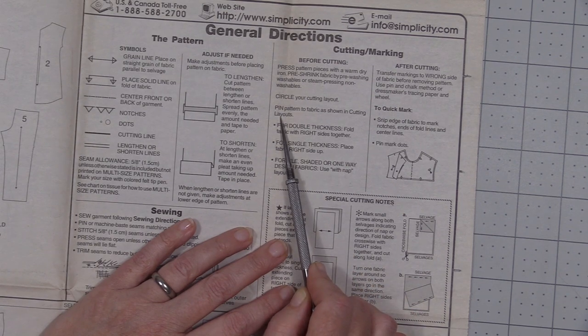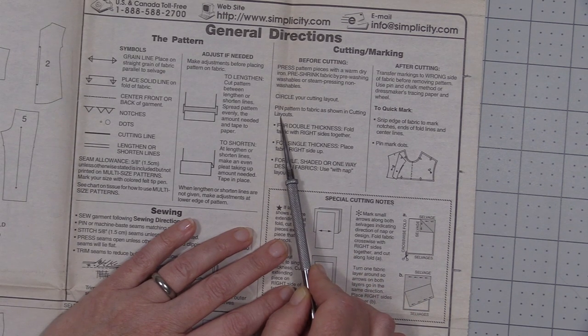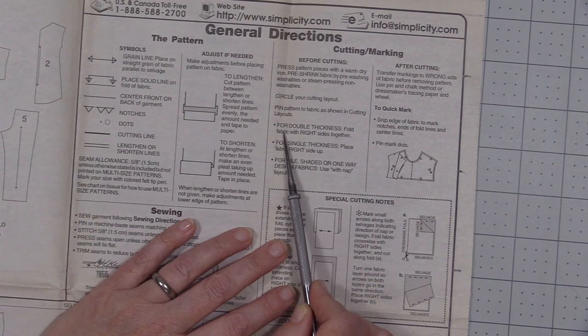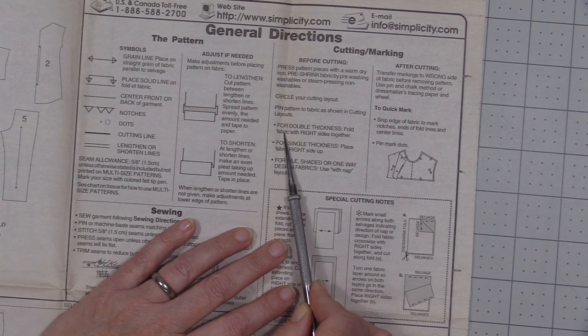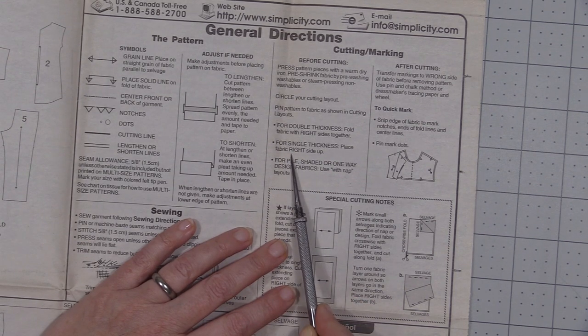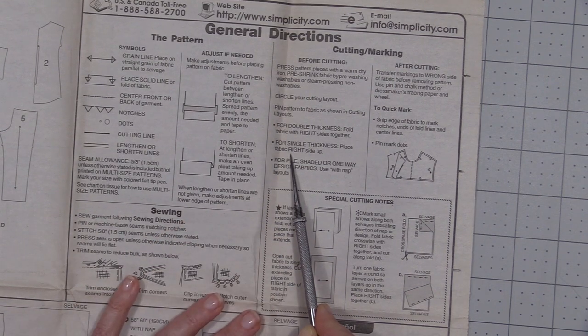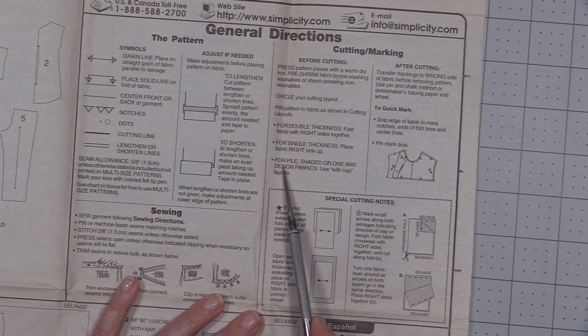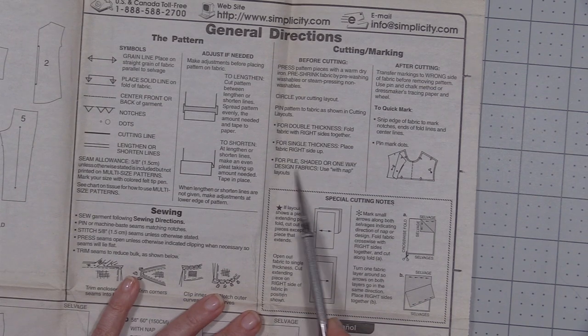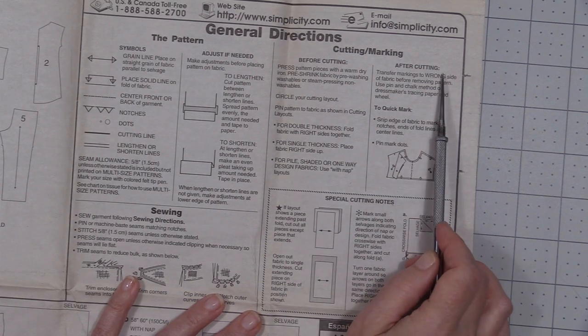Pin the pattern pieces to the fabric as shown in the cutting layout. For double thicknesses we're going to fold with right sides together, for single thicknesses we're going to place it fabric side up, right side up. We're not going to be using any pile so we don't need to worry about this.